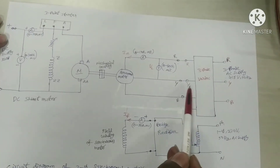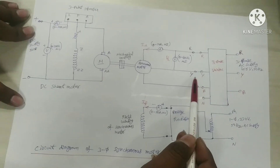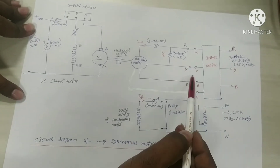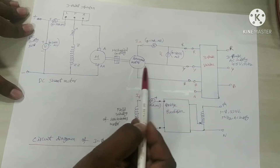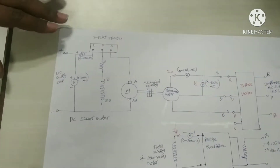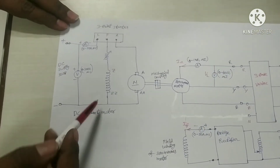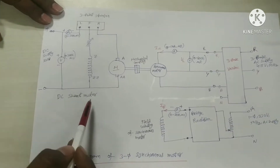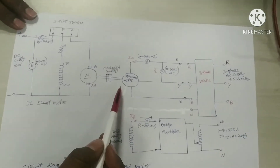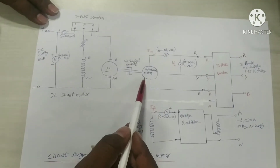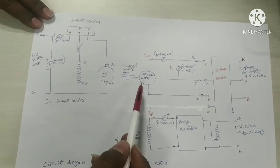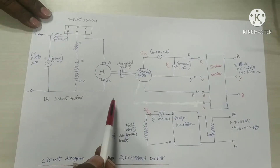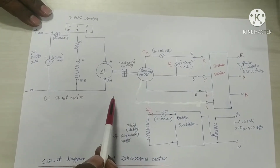By using a 3-phase variac, we are going to give the 3-phase AC supply to the stator winding terminals of the synchronous motor. And by using a DC shunt motor, we are going to start the synchronous motor, because a synchronous motor is not a self-starting motor.